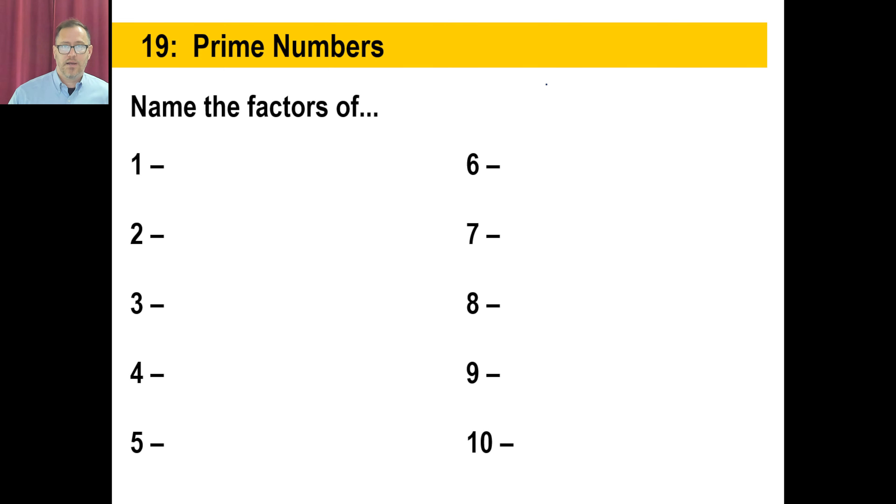Name the factors of 1. Let's talk about prime numbers. A prime number basically is a number that is only divisible by itself and 1. The factors of 1, 1 and 1. 2, 1 and 2. 3, 1 and 3. 4, that's 1 and 4, but also 2 and 2, right? 5 is only 1 and 5. 6 is 1 and 6, but also 2 and 3. 7 is only 1 and 7. 8 is 1 and 8, and then we got 2 and 4 as well. 9 is just 1 and 9, we got 3 and 3. And 10 is 1 and 10, or maybe 2 and 5. In other words, prime numbers we're looking at are the ones that only have themselves and 1 as a factor. 1 is not considered a prime number.